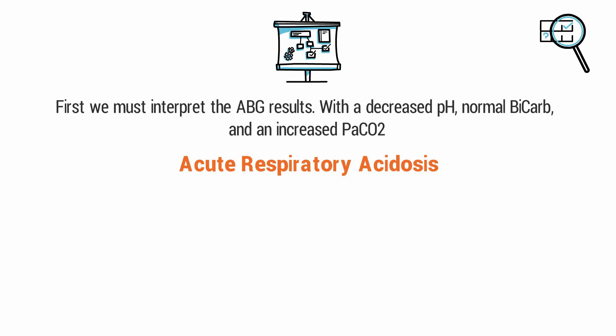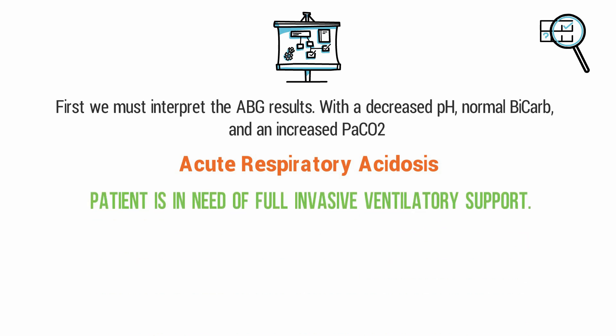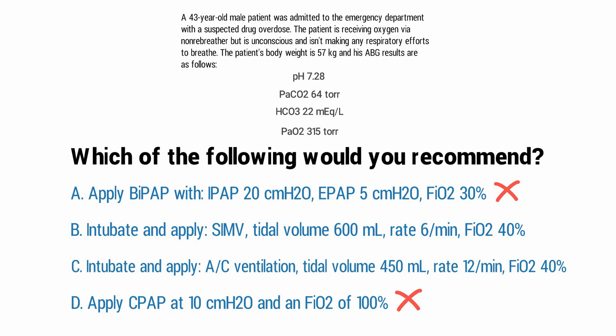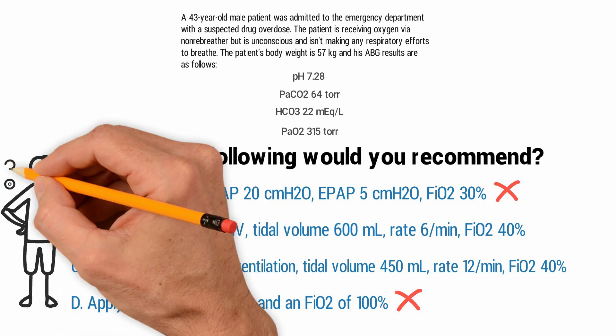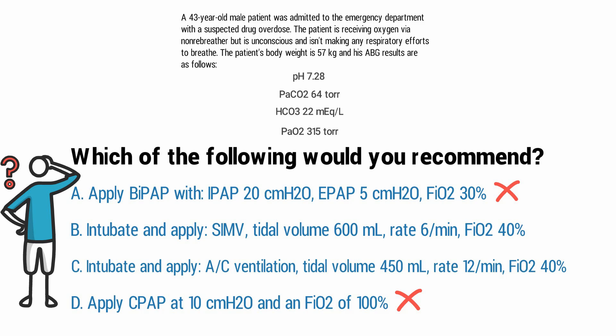Along with the other information gathered in the question, this lets us know that the patient is in need of full invasive ventilatory support. That means we can rule out A and D automatically because BiPAP and CPAP are forms of non-invasive ventilation. Now we just need to figure out which remaining option is best. SIMV mode at a rate of 6, which is very low, is only going to provide partial ventilatory support.